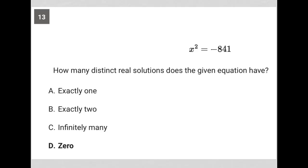This question starts off by telling us that x squared is equal to negative 841. It goes on to say how many distinct real solutions does the given equation have.